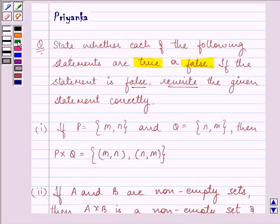So let us start with our first statement. It says if P is equal to elements M and N, and Q has elements N and M, then P cross Q is equal to the ordered pairs (M,N) and (N,M). So this is a false statement.